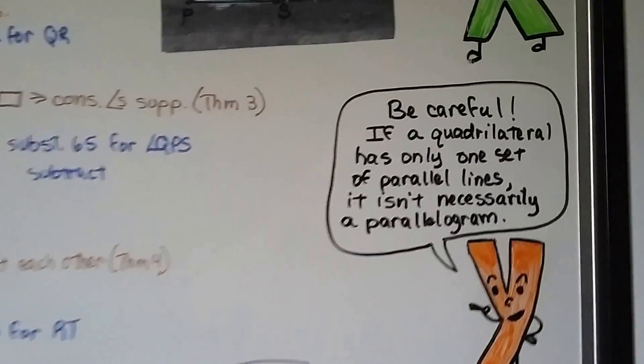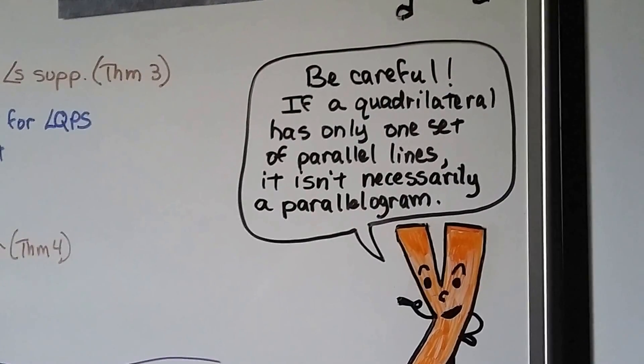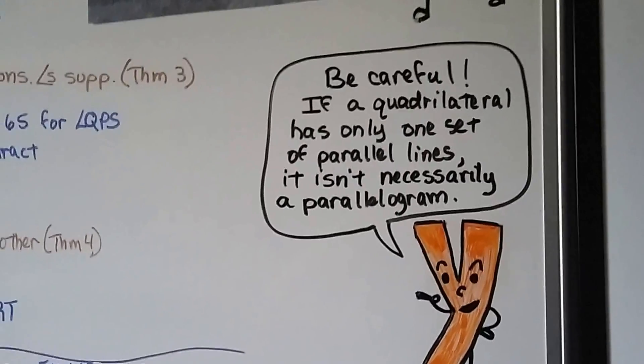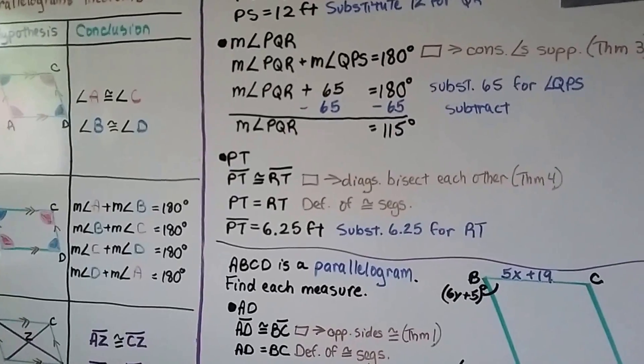So be careful if a quadrilateral has only one set of parallel lines. It isn't necessarily a parallelogram. Watch the little notations and the little markings that are on the diagrams. And be careful with that because sometimes the markings are tiny.